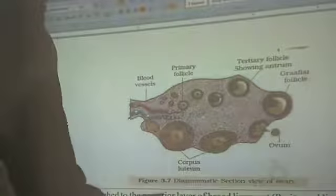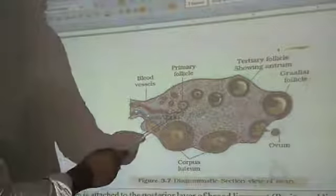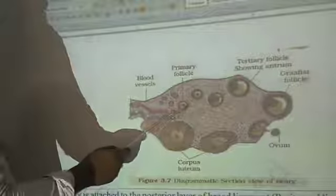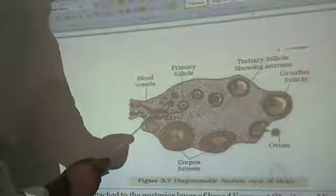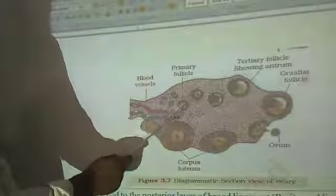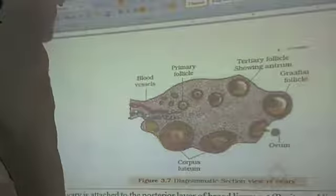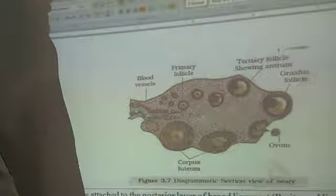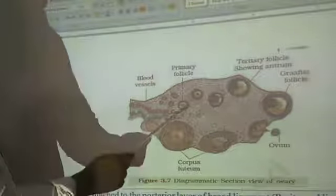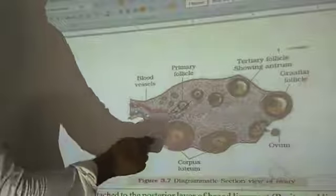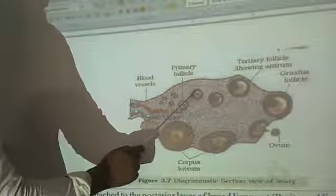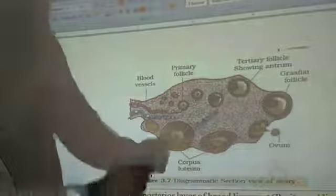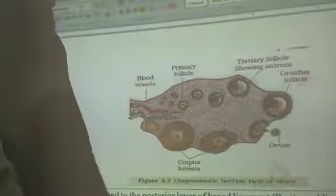The primary follicle is a primary oocyte surrounded by one layer of granulosa cells. If more layers of granulosa cells are added surrounding the primary oocyte, that is called the secondary follicle.